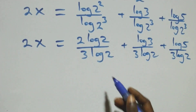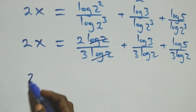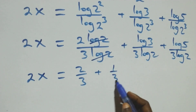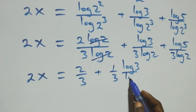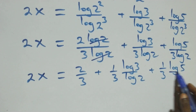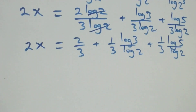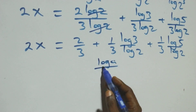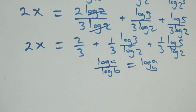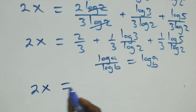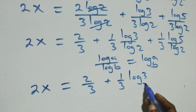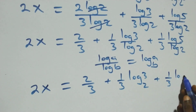From here, log 2 cancels each other, leaving 2x equals 2 over 3, then plus 1 over 3 multiplied by log 3 over log 2, then also plus 1 over 3 multiplied by log 5 over log 2. We apply the change of base formula: log a over log b can be written as log a to base b.